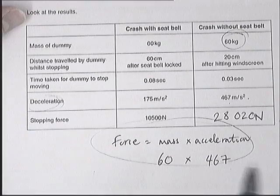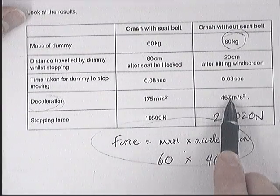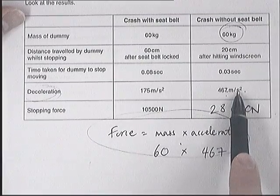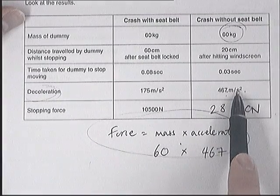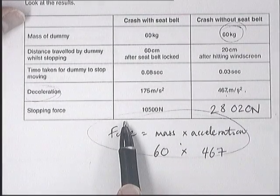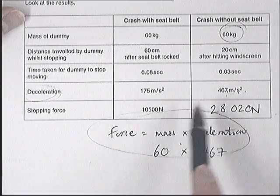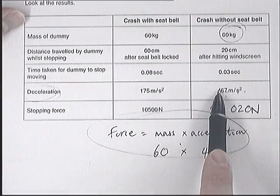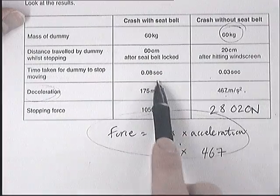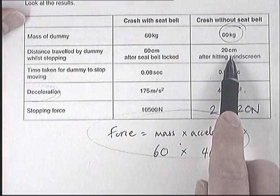For level two, you had to actually do the calculation and explain the difference in force — more force for a crash without a seatbelt than with a seatbelt — in terms of the difference in deceleration, or the difference in stopping time, or the difference in distance.